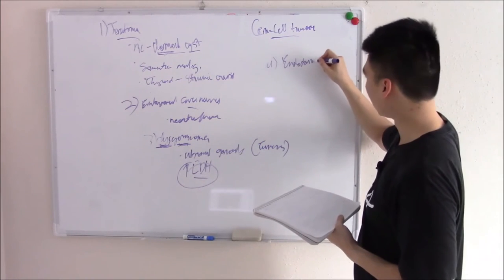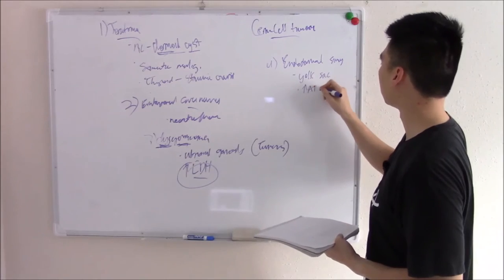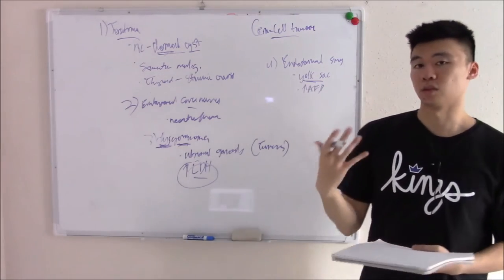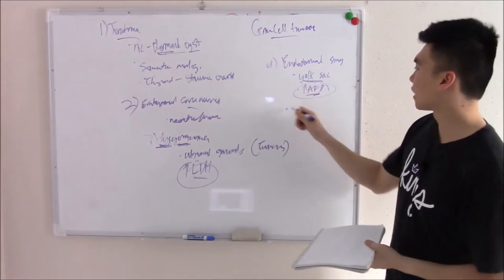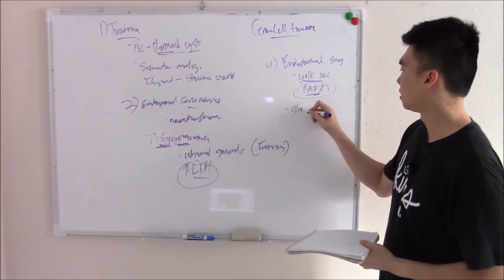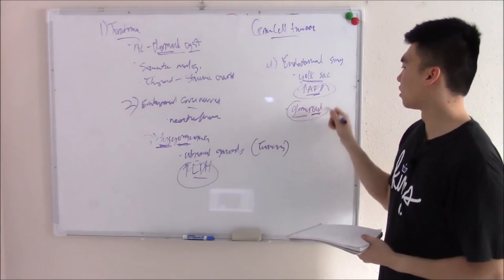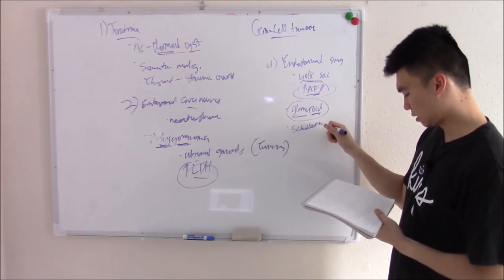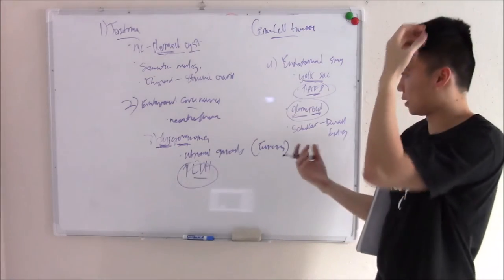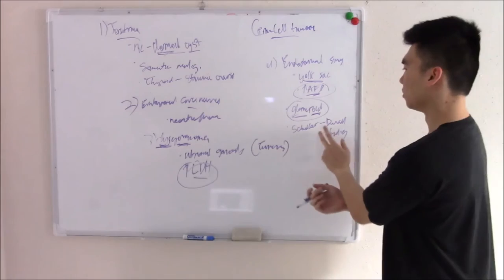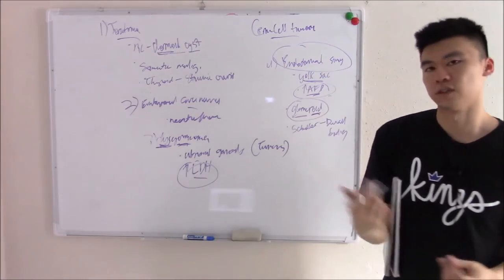Lastly is your endodermal sinus tumor. This mimics your yolk sac. There's increased alpha fetoprotein. Why? Your yolk sac makes alpha fetoprotein - that's the first site of production. The last fact is there are structures in it that look like glomeruli - glomeruloid. The full name is Schiller-Duval bodies. If they show the picture or mention glomeruloid body, they're talking about endodermal sinus tumors. What could be raised? Alpha fetoprotein.